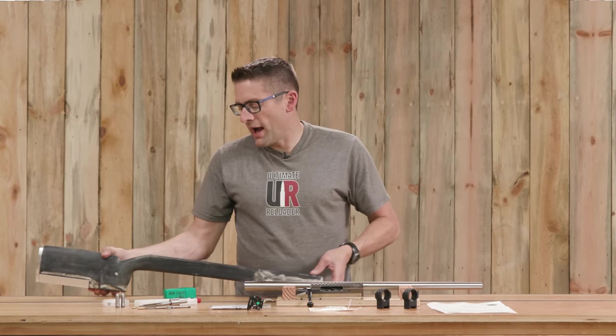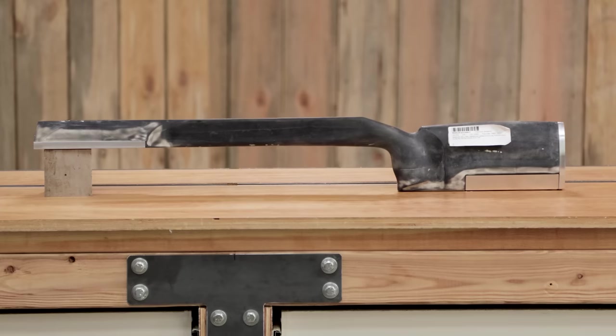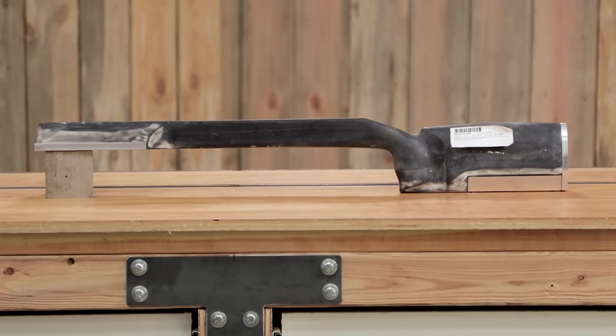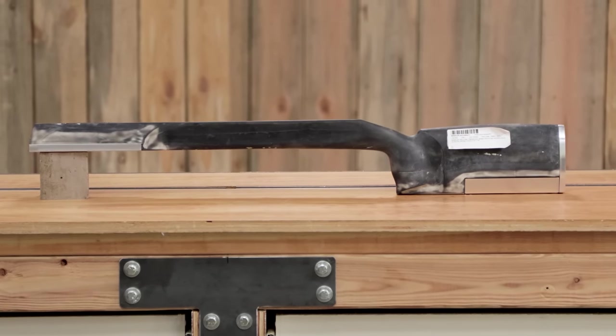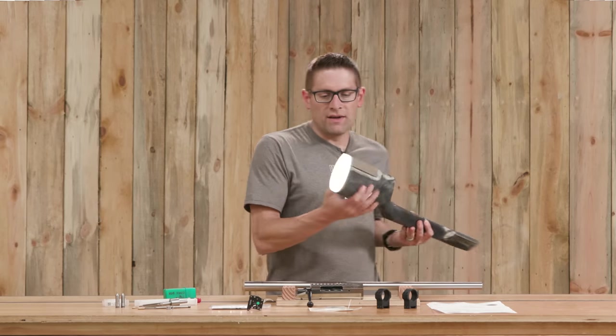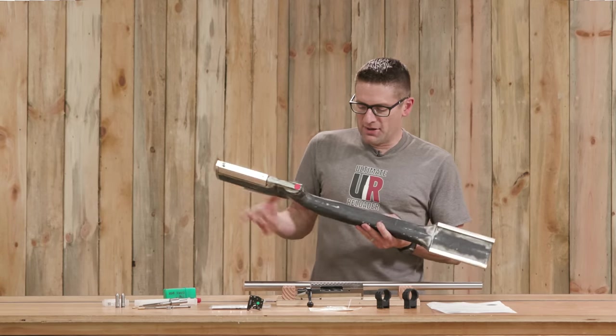We've also got the Wheeler Accuracy LRB stock. This thing is absolutely insane. It's fiberglass. It's got the steerable rudder and a metal butt pad on it.